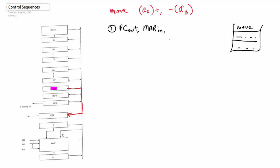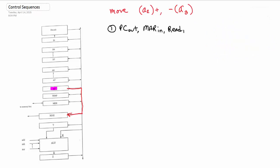Now that it's in the address register, we can read from it and figure out what our command is. Now we want to increment our program counter for the next guy. If we didn't increment, we'd just be reading the same command over and over. We want to increment the program counter to look at the next line. So the way we do that is we clear Y.